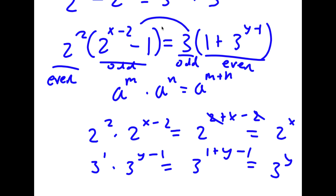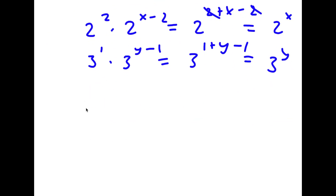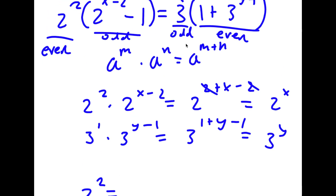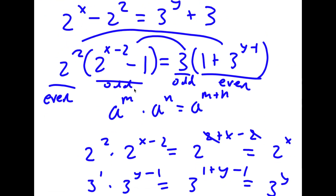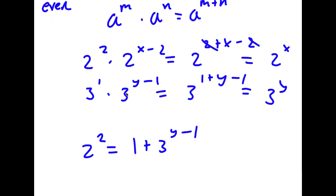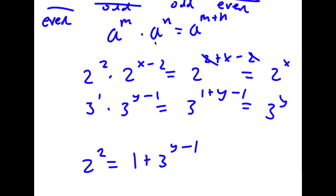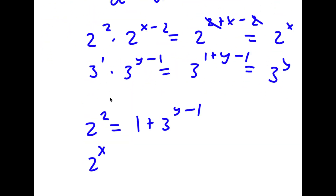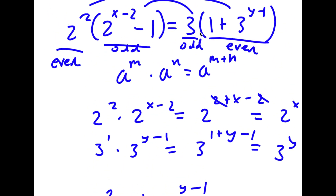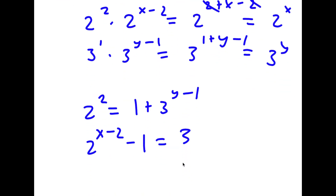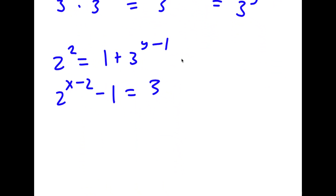This means the two odd numbers are equal to each other, and the two even numbers are equal to each other. So I get two equations: 2 squared equals 1 plus 3^(y-1), and 2^(x-2) minus 1 equals 3.